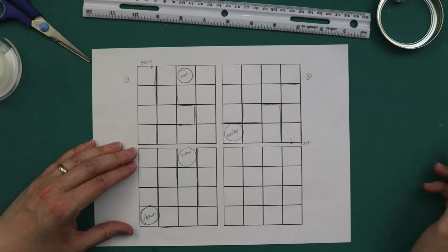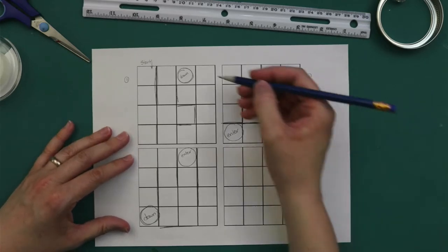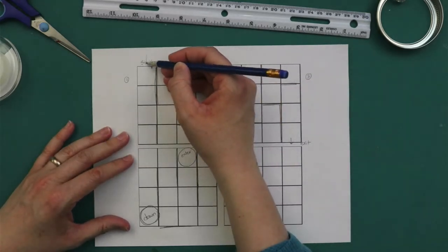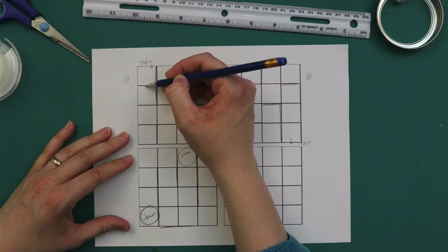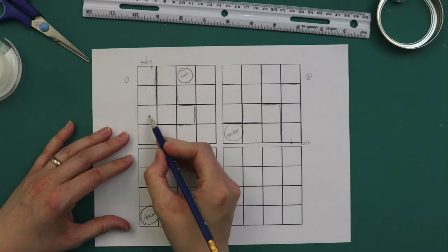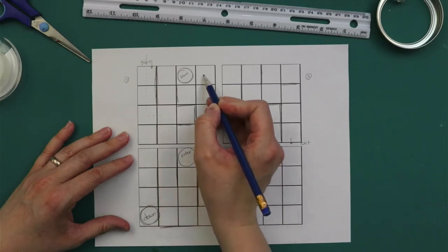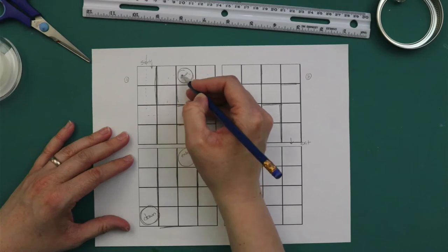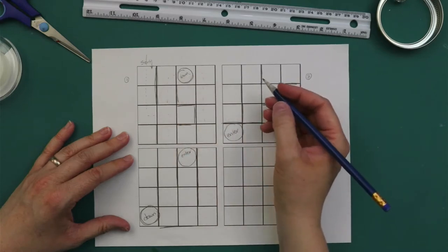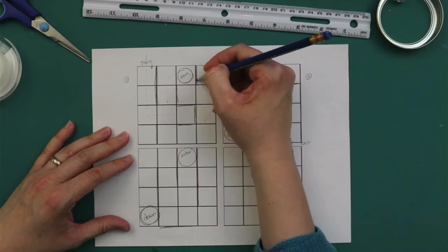Okay so now I've drawn my maze so the marble will enter the maze here. It can go down and over and then it can either go around this way or up this way to the exit. Actually let me make a wall there too.